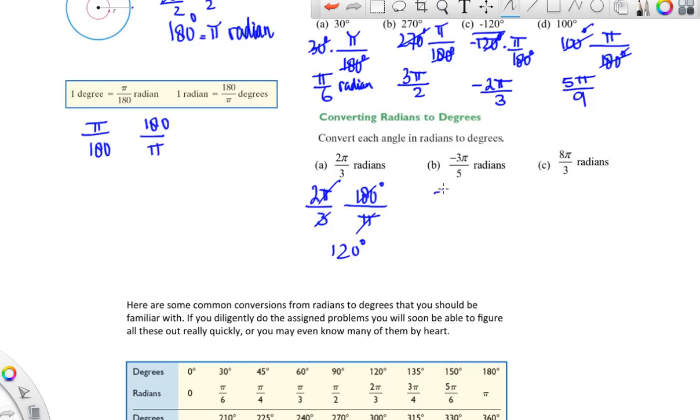Okay, negatives doesn't matter either, so you do exactly the same thing. So you want to go from radians to degrees, so that means the π goes at the bottom. They cancel. Let's see. 180 is divisible by 5. It's 36. 3 times 30 is 90, plus 18 is 108 degrees with a negative.